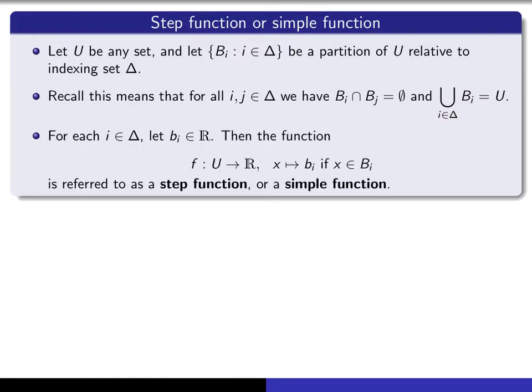Whenever we have such a partition, we can define a function as follows. If for each member of the partition we simply give ourselves some real number b_i, then we can define the function f from U into R, it's a real-valued function, so that if x is in the B_i, the ith member of the partition, then we map x to b_i. So we're making x a certain constant real number on each member of the partition. We refer to such a function as a step function or a simple function.